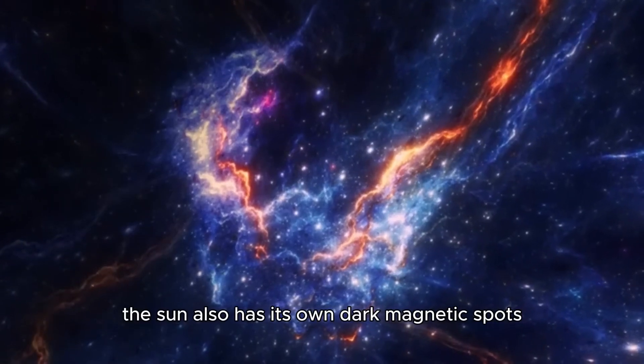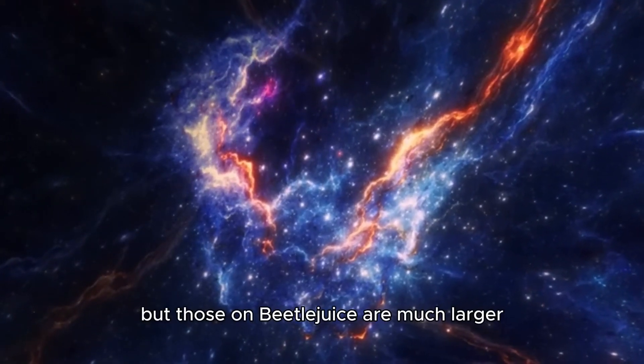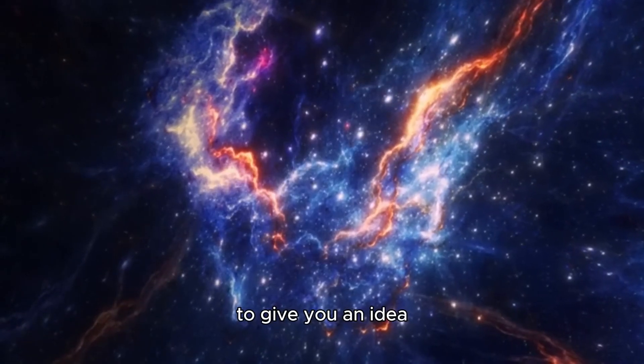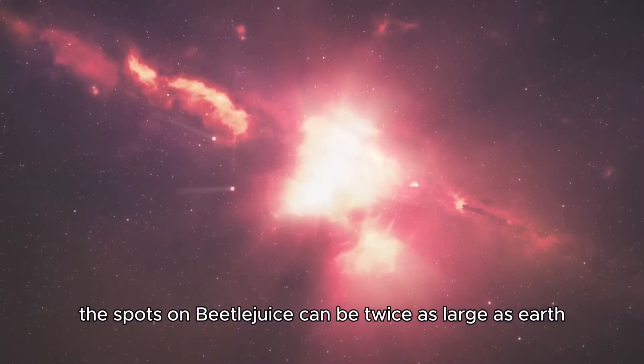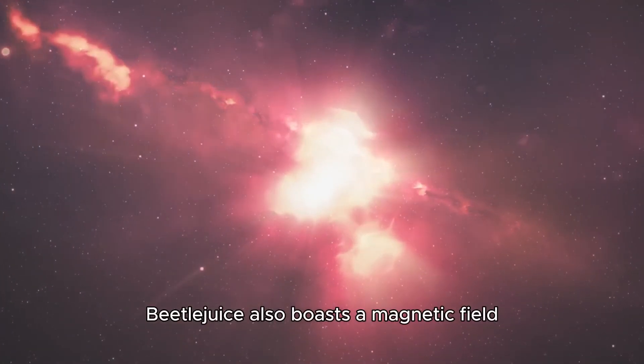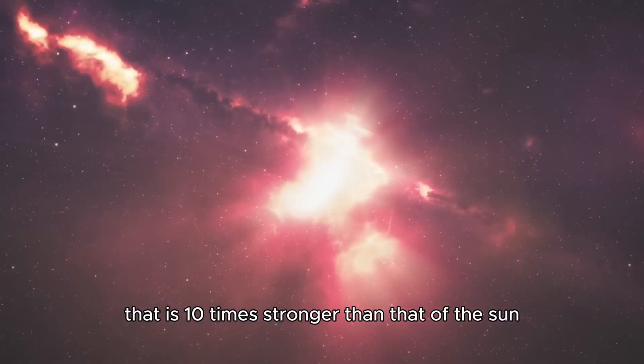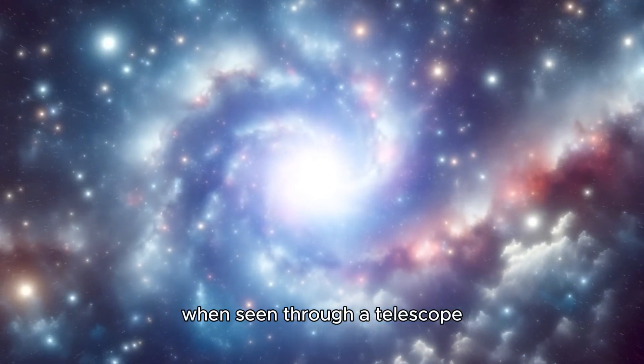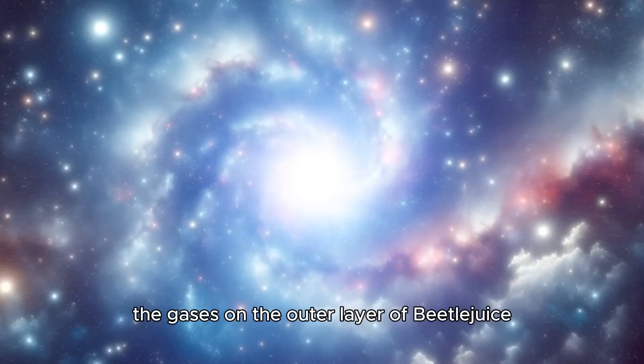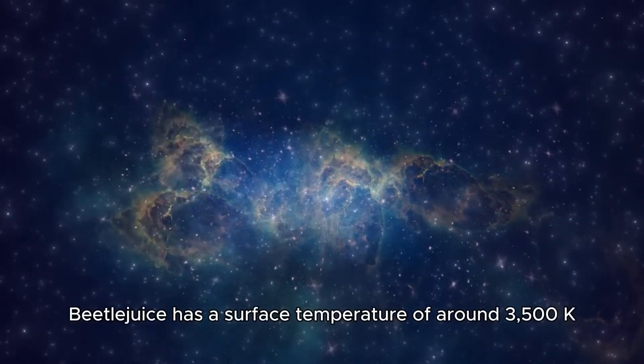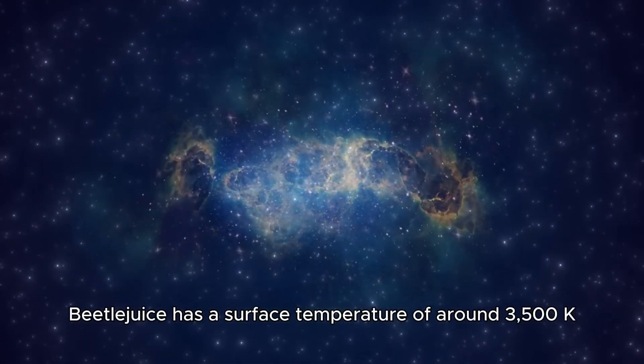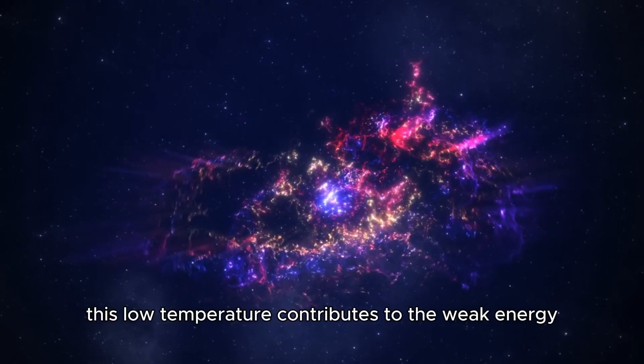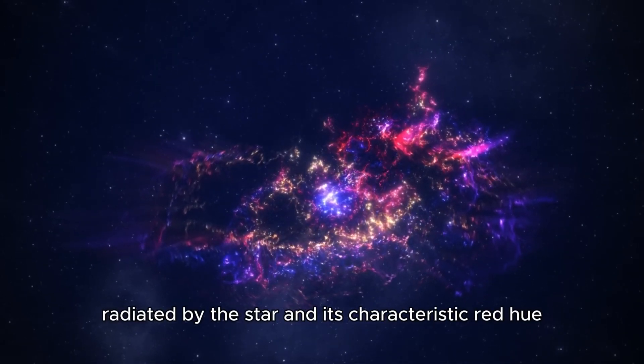The sun also has its own dark magnetic spots, but those on Betelgeuse are much larger and significantly more numerous. To give you an idea, the spots on Betelgeuse can be twice as large as Earth. Betelgeuse also boasts a magnetic field that is 10 times stronger than that of the sun. This field is the reason that, when seen through a telescope, the gases on the outer layer of Betelgeuse appear to be in circles or curves. Betelgeuse has a surface temperature of around 3,500 K. This low temperature contributes to the weak energy radiated by the star and its characteristic red hue.